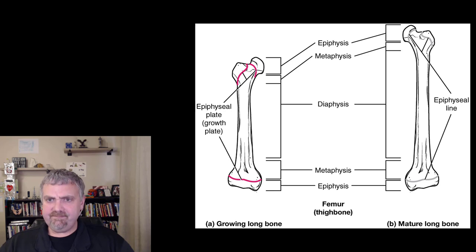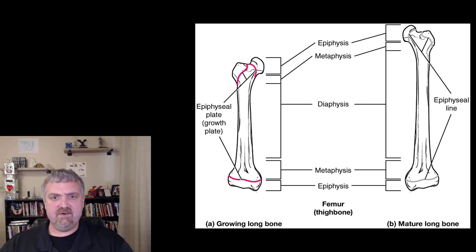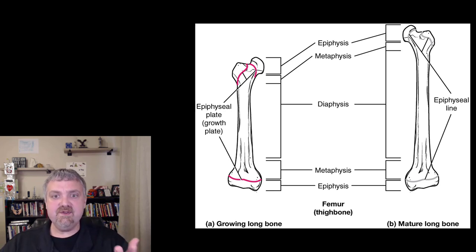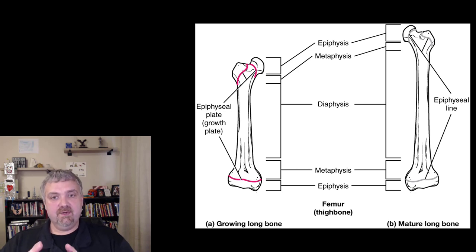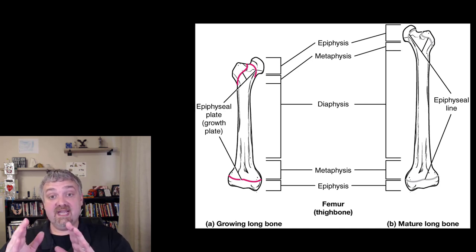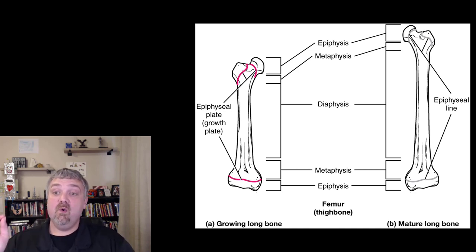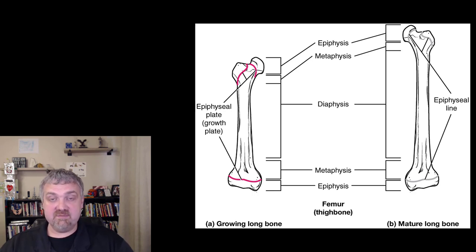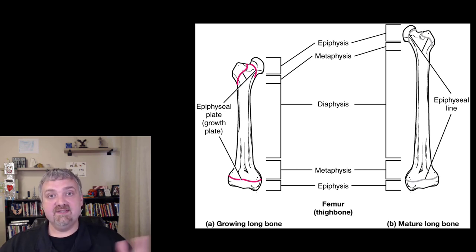Here you can see it. If you still have growth plates, where those fuchsia colors are, there would still be cartilage there — so on an x-ray you'd see them as open spaces. Once you see a bony line there, then we know the bone is mature and bone lengthening has ended.